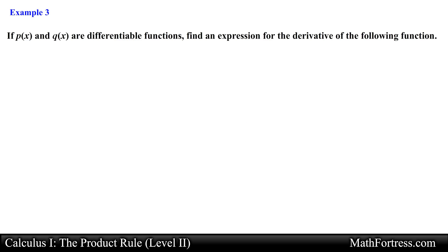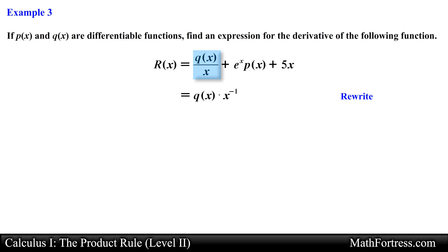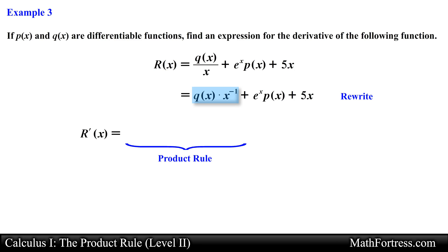Let's try one more example. If p and q are differentiable functions, find an expression for the derivative of the following function: r equals q over x plus e to the x times p plus 5x. This function is defined by three distinct terms. The first term contains the function q and the rational function 1 over x. In order to find the derivative of this term, we rewrite it into a derivative-friendly form: q times x raised to the power of negative 1. Now we apply the product rule with q as the first function and x to the negative 1 as the second function.